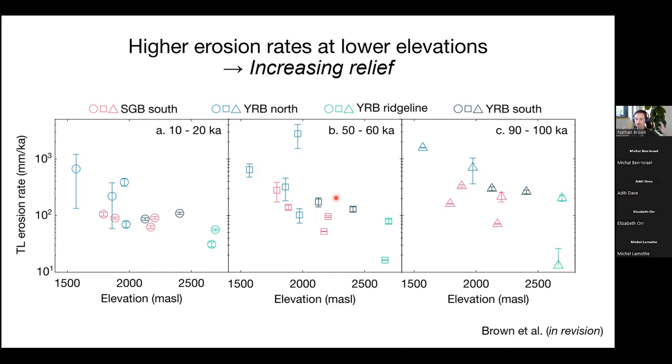Another sort of thing that I imagine this audience would be interested in doing with data like this would be looking at how these outcrop scale erosion rates vary with different landscape metrics. So for example, you can look at the relationship between the luminescence erosion rate and the elevation for different time slices. So here is that relationship 10 to 20,000 years ago, 50 to 60,000 years ago, or 90 to 100,000 years. Now some samples drop off on this oldest time slice just because they don't have any cooling ages that old. In other words, they're exhuming faster than the others. But this type of analysis is really useful for learning in situ erosional patterns. So in this case, we see a general trend of increasing relief. We have higher erosion rates at lower elevations, so we would expect the relief of this landscape to increase with time.